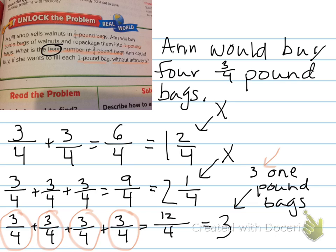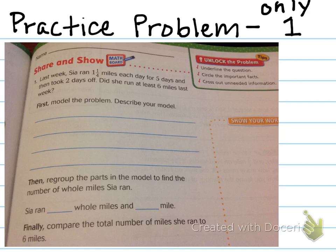A problem like this takes a little longer — it takes some figuring out and different tries. But we know you have those persevering skills to just keep trying until you find a solution that works. There's only one practice problem this evening about Sia and running. Use the steps here to help you solve this multi-step problem. Have a great night — see you tomorrow!